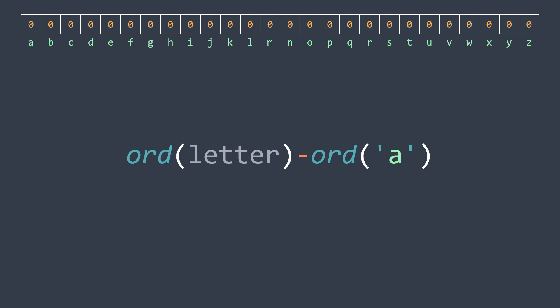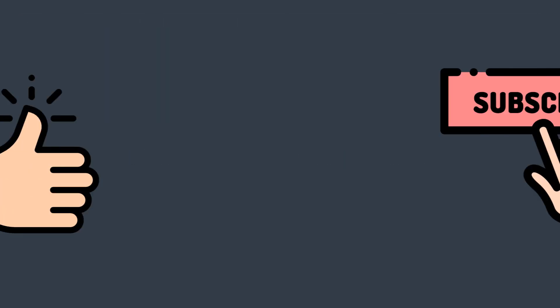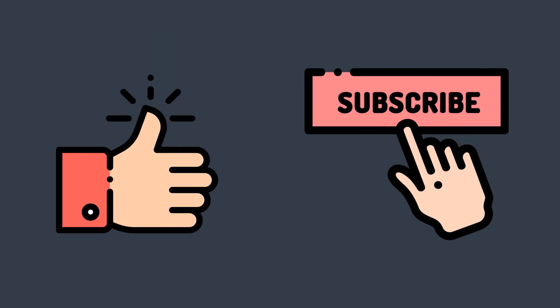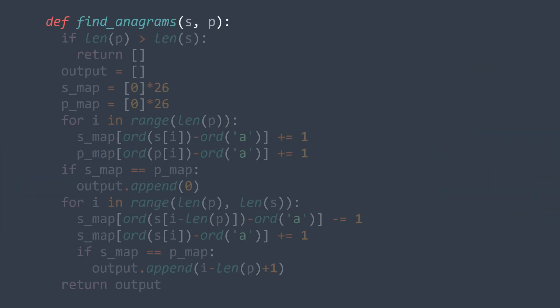Now we can move to the code. For our solution, we first put the early exit condition: if p is longer than s, we cannot find an anagram of p in s, so we return an empty array.